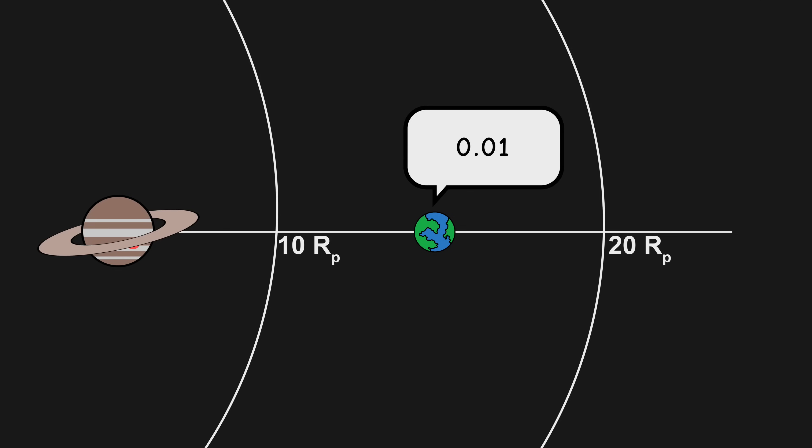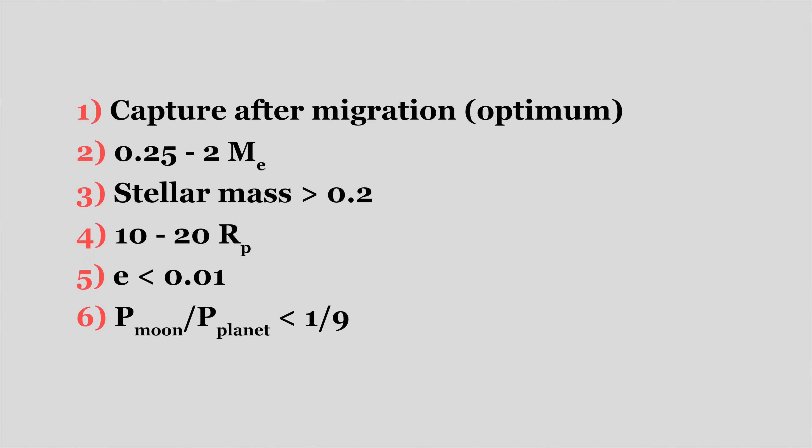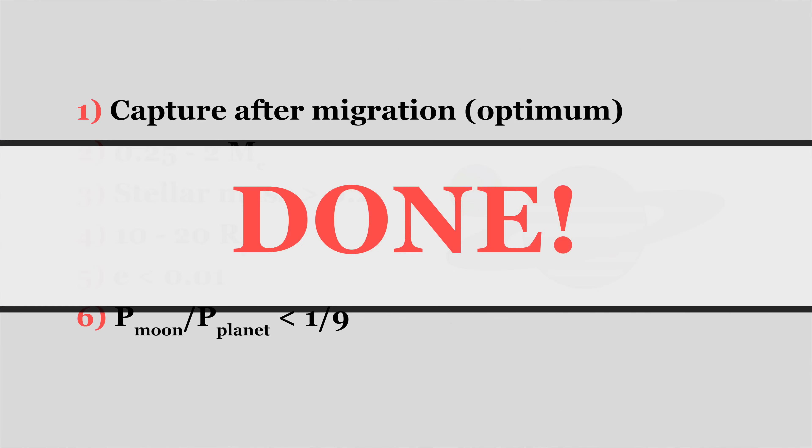As an extra stability measure, ensure that the ratio of the moon's orbital period, given by this equation from the previous video, and the planet's orbital period, is less than 1 over 9. Interestingly, all captured objects tend to be irregular satellites. So, in theory, we could place our moon on an inclined, or even retrograde orbit. And there you have it. Habitable moon, done.